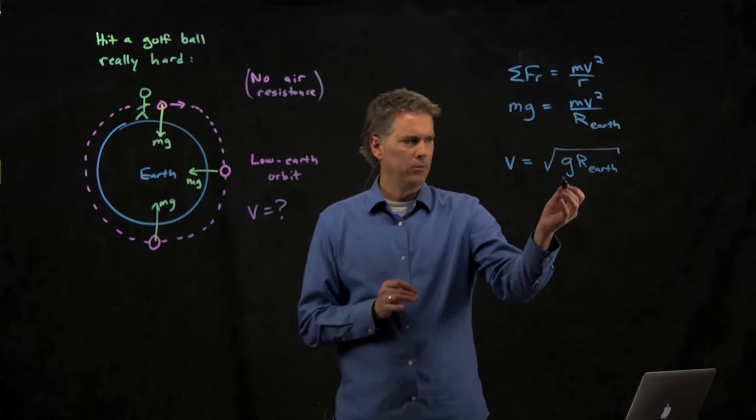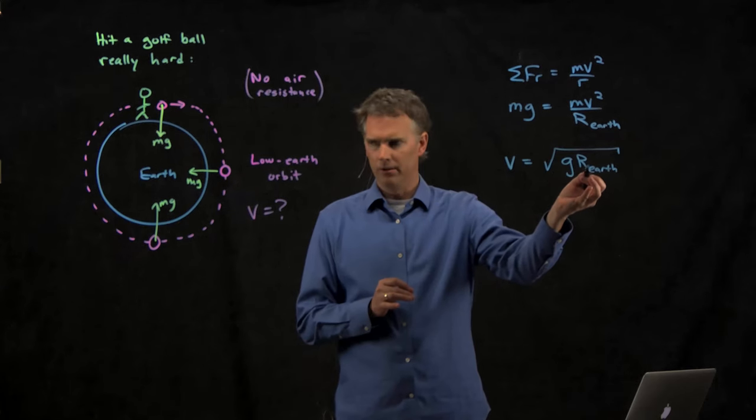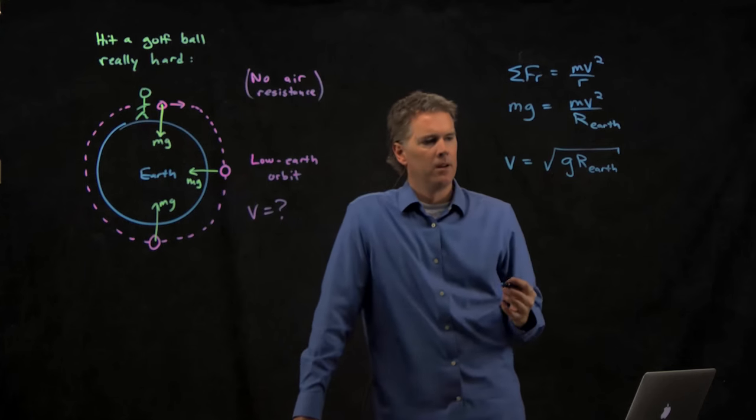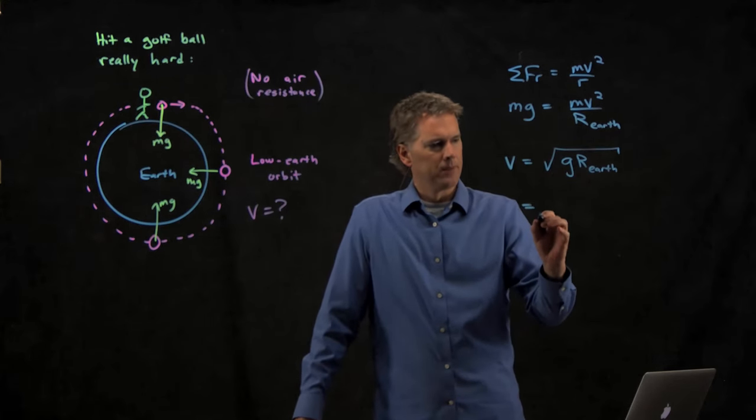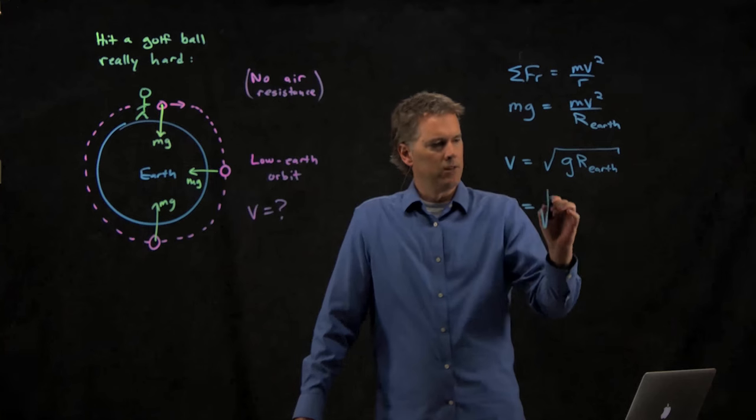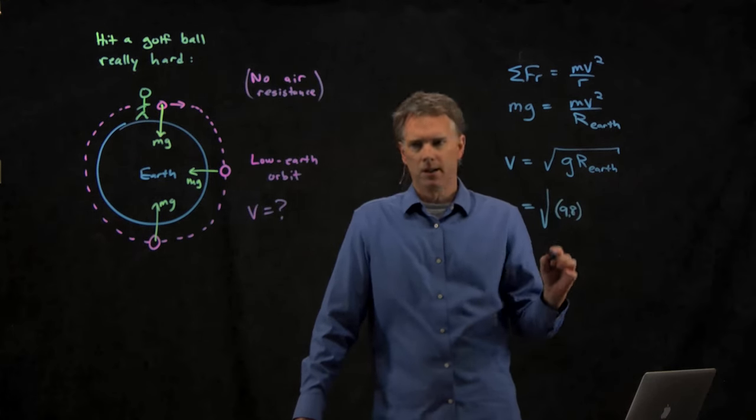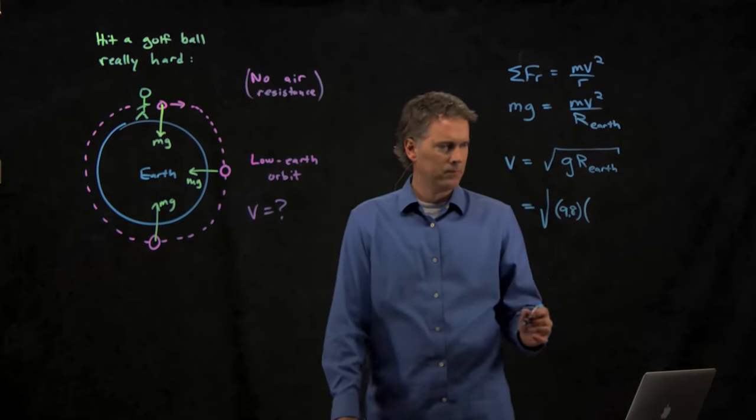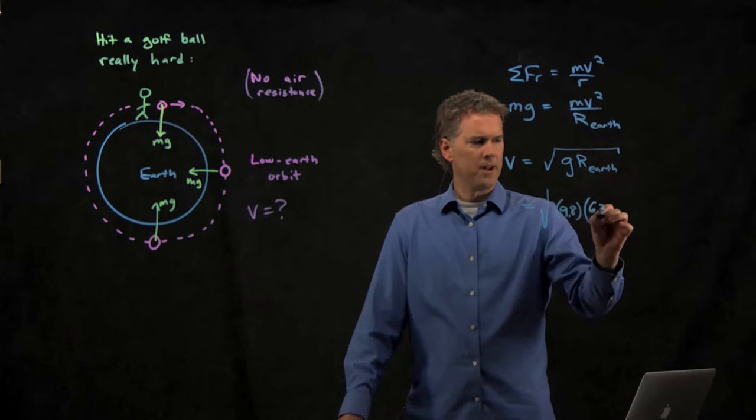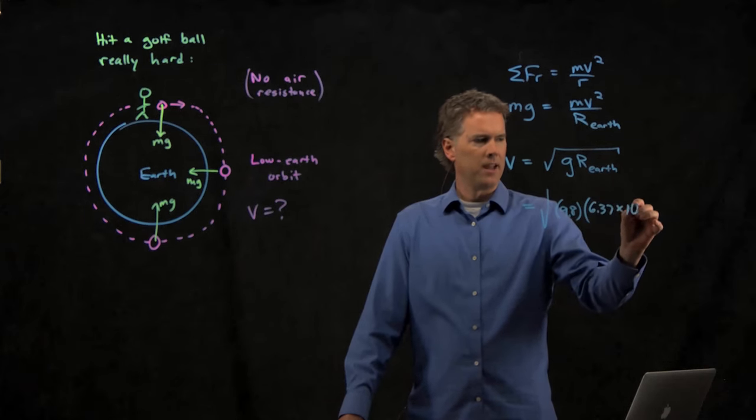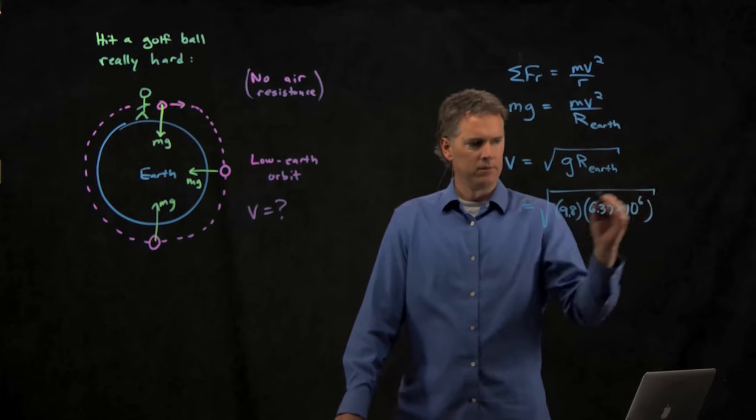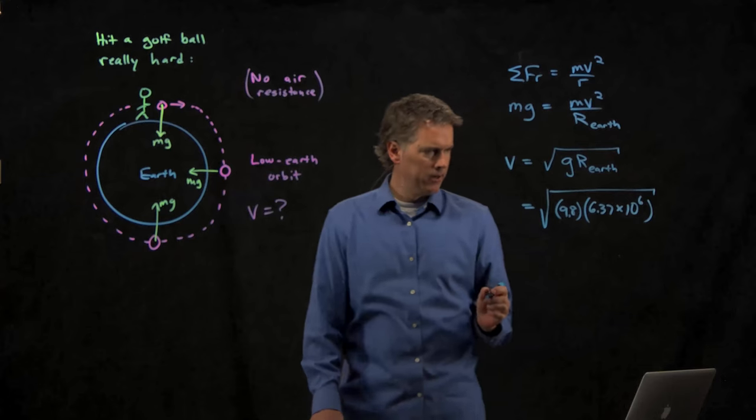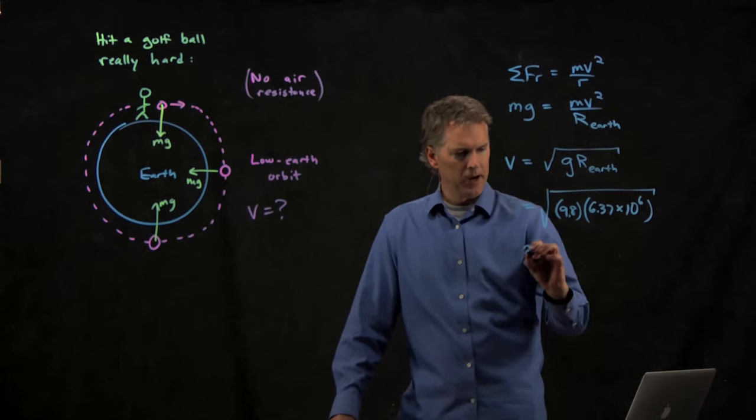Units look right. We've got meters per second squared. I'm going to multiply by meters. And so we're going to get meters squared per second squared. And when I take the square root, that works out. Let's see what this is for real. G is 9.8. What's the radius of the earth? We talked about this last time. Anybody remember? 6.37 times 10 to the 6 meters. That's the radius of the earth.